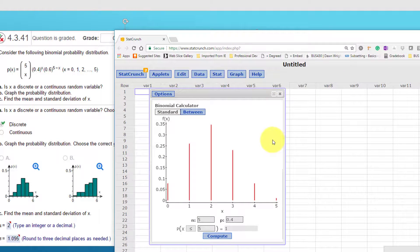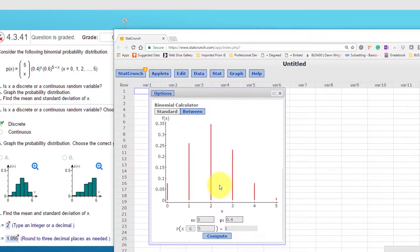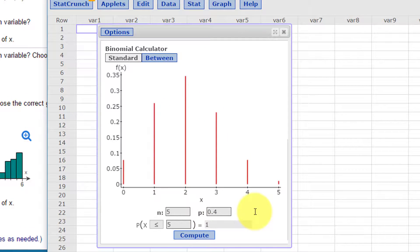Remember, although it's not part of this problem, 4.3.41, once you've gotten your binomial distribution in the calculator, you can calculate these particular values. This shows the probability of less than or equal to 5 is 1. And we've got red bars in all of those. I can put less than or equal to 3 and click Compute. And it gives me the probability of 0.91. Again, the red bars.